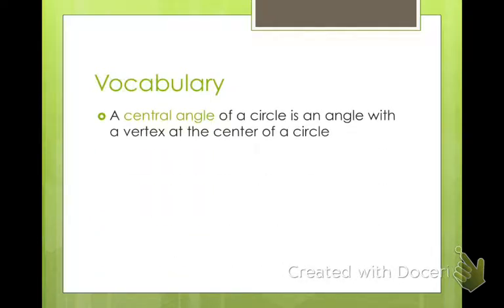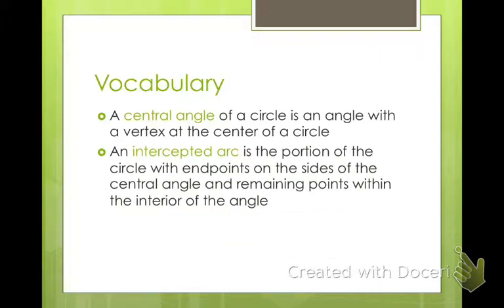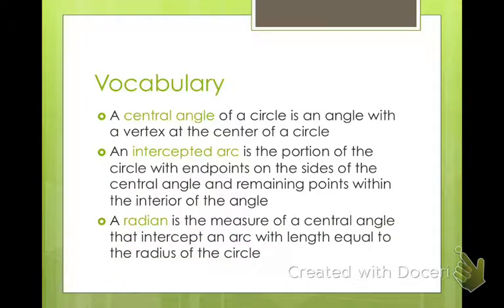For our vocab, a central angle of a circle is an angle with a vertex at the center of a circle. Let me draw a picture—circle, center, angle. An intercepted arc is the portion of the circle with endpoints on the sides of the central angle and the remaining points within the interior of the angle. A radian is the measure of a central angle that intercepts an arc with a length equal to the radius of the circle. So a radian is just another way to measure angles.